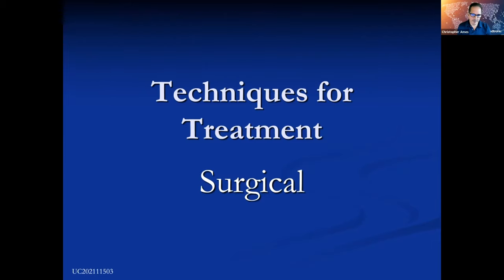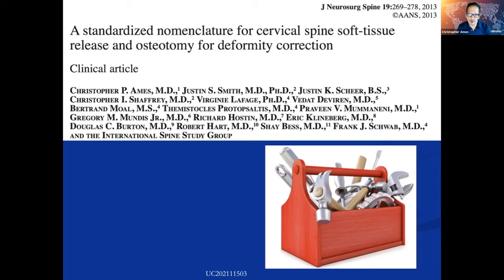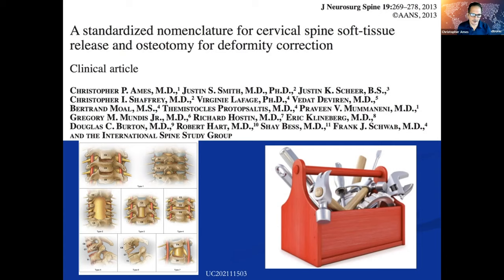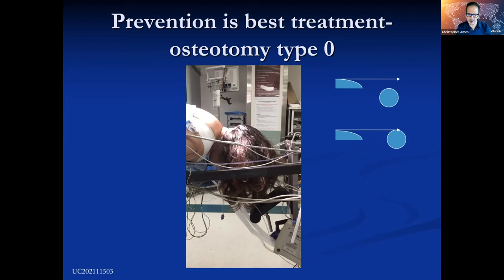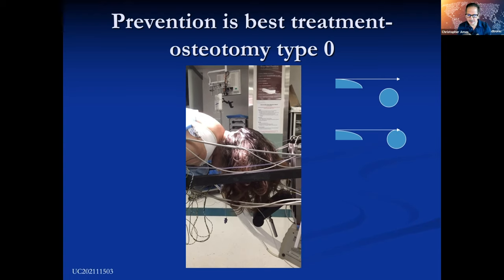In the last five minutes, let me talk about our techniques for treatment. The first thing we needed to do was develop a common nomenclature for our soft tissue releases and bony releases — I'll refer you to the Journal of Neurosurgery Spine for detail. We graded these in a very similar way to the Schwab osteotomy classification in the thoracolumbar spine, concentrating mostly on the type 6 osteotomies. But before that, I want to show a very simple method to prevent deformity.